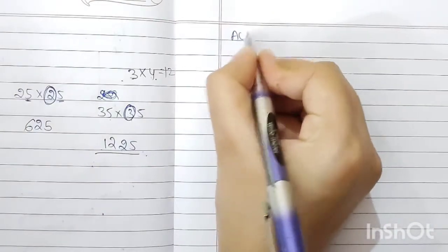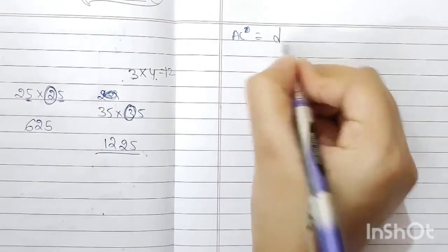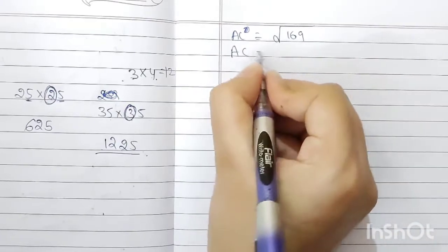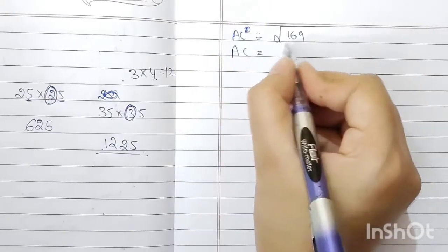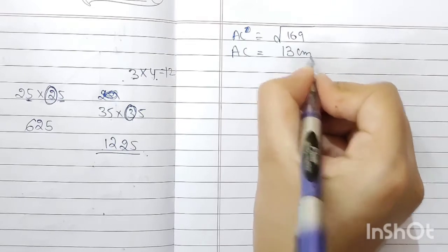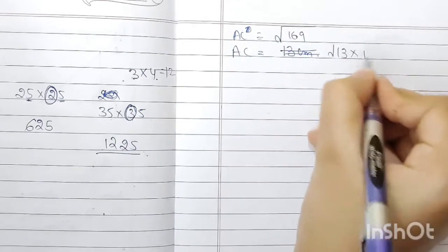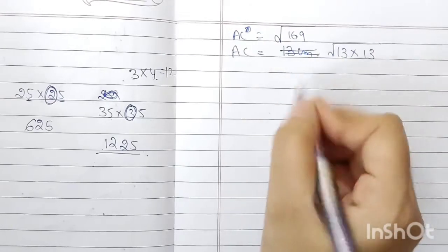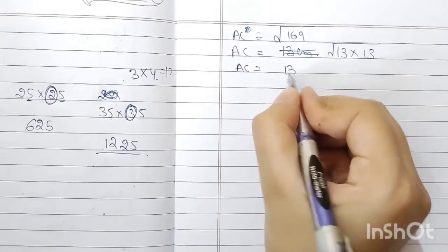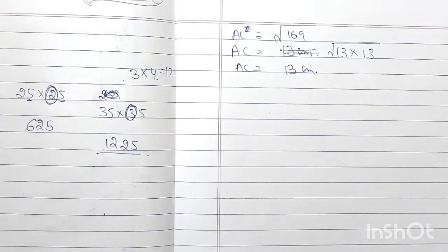Taking the square root: AC = √169 = 13, since 13 × 13 = 169. So AC = 13 cm.